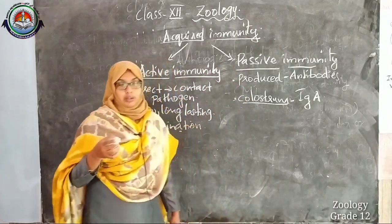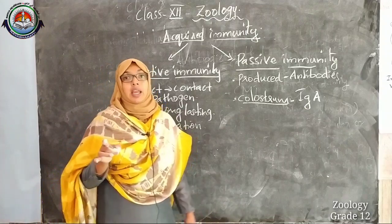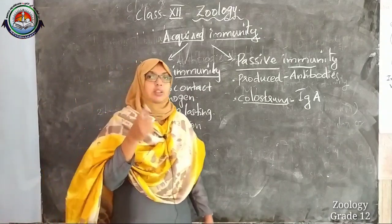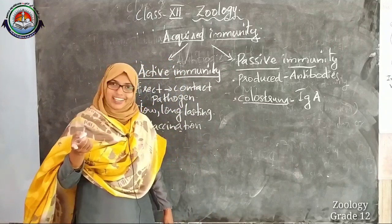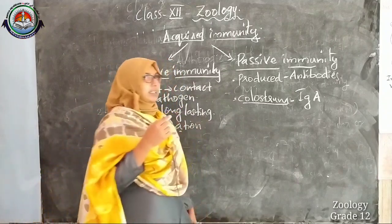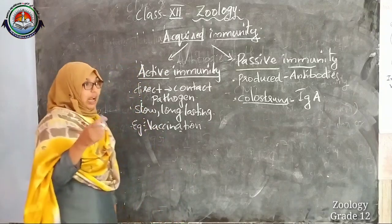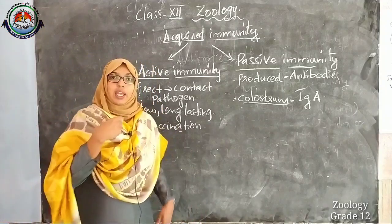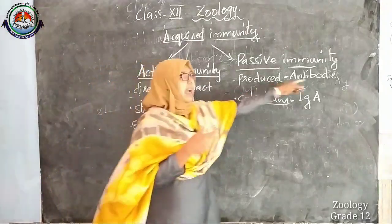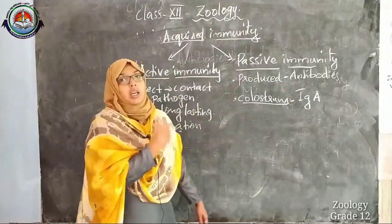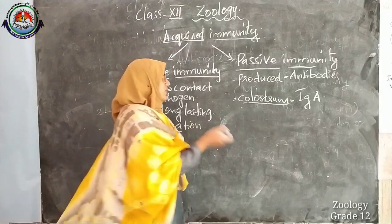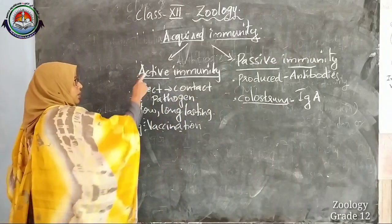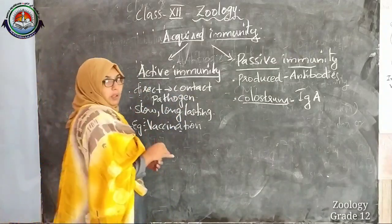Another example: when a mother is carrying a fetus, the fetus draws many antibodies from the mother's body through the blood. Also, gamma globulin injections — which consist of ready-made antibodies deliberately injected to the body — are another example. All these constitute passive immunity, while vaccination constitutes active immunity.